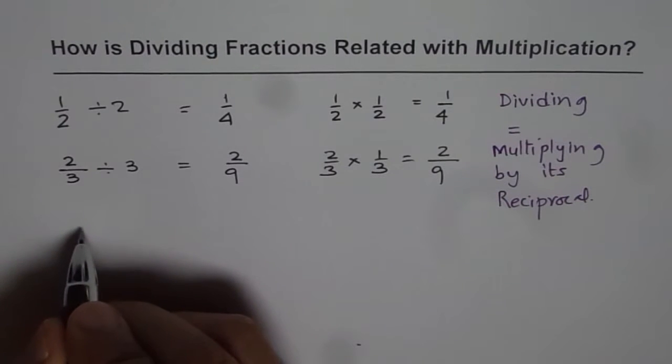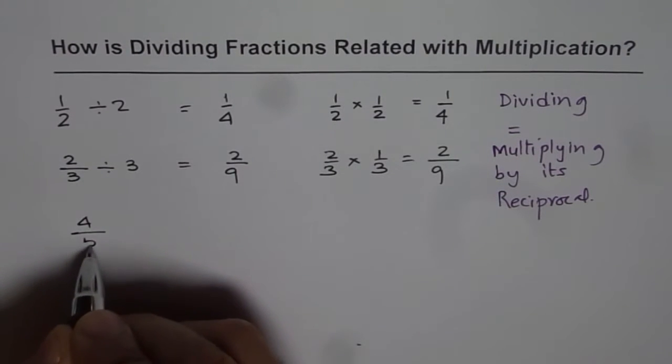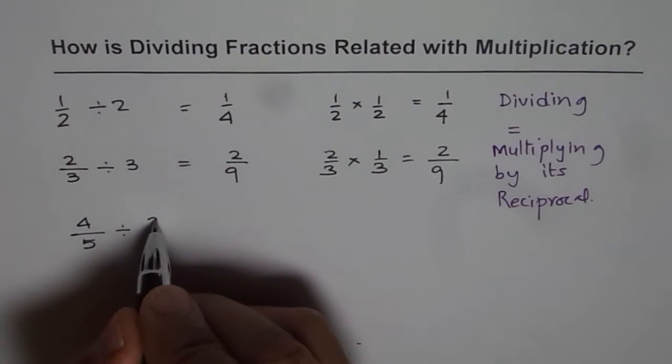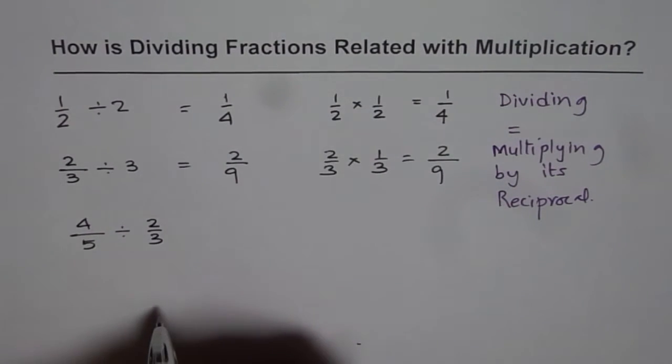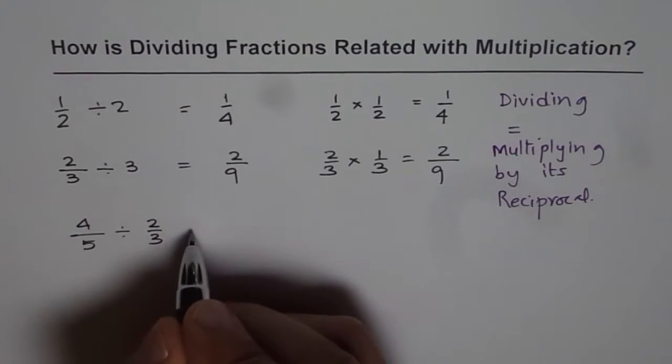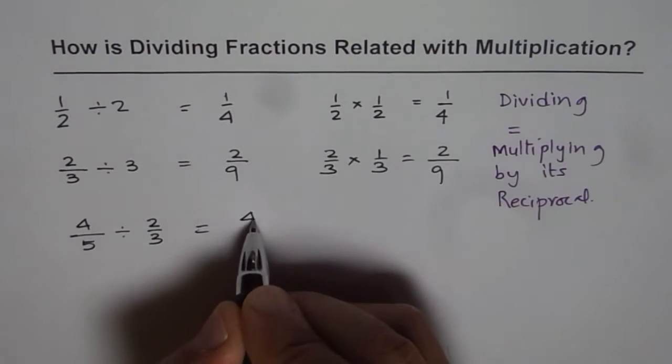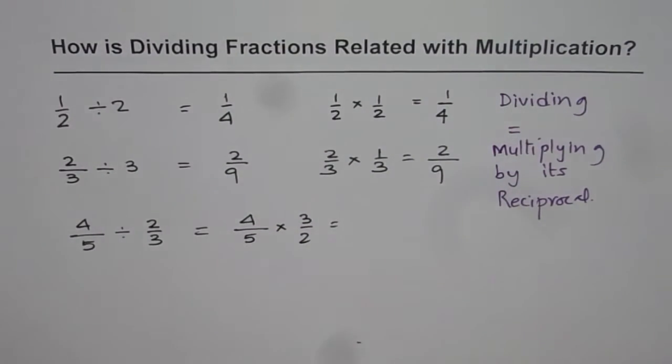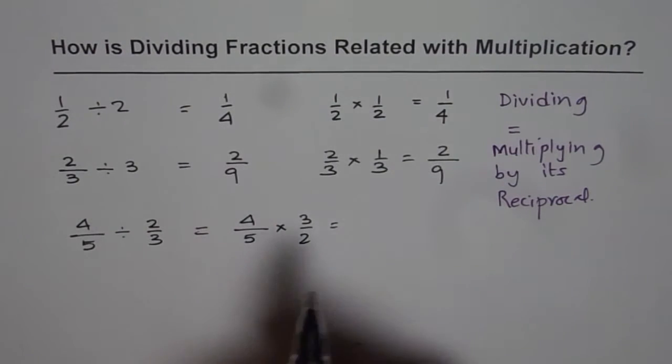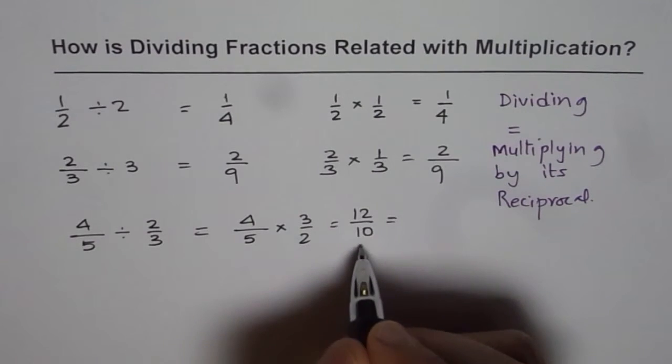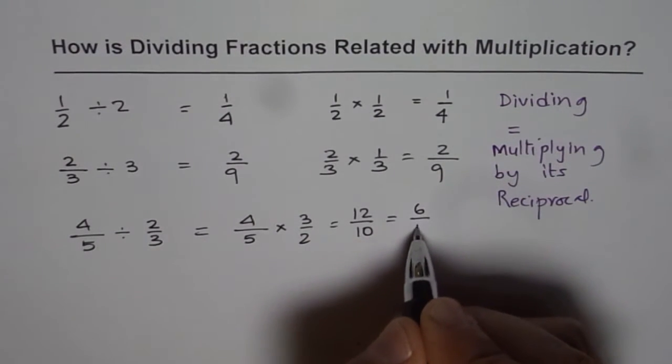Let us say this time, if we have to divide 4 over 5 by something like 2 over 3, what should we get? Since we know dividing is the same as multiplying, we can write this as 4 over 5 times 3 over 2 and then find the answer. So it is 4 times 3 is 12, 12 over 10 or dividing both by 2, 6 over 5.